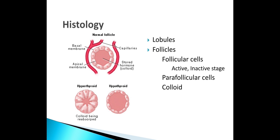Each follicle contains a single layer of cuboidal epithelium. It is filled with a clear viscous material called thyroglobulin, which is called the colloid. The colloid contains thyroglobulin. The parafollicular cells are present in between the follicles and secrete calcitonin. You can see the colloid is less in hyperthyroid and more in hypothyroid — lesser in active hyperthyroid or inactive hypothyroid.